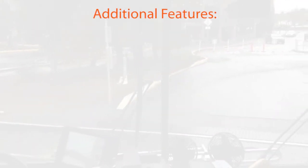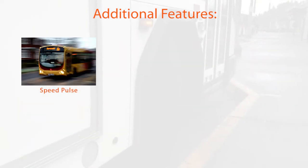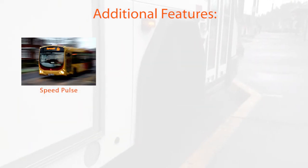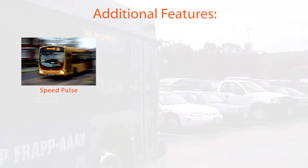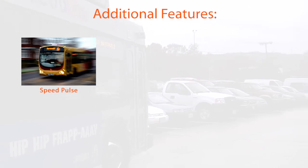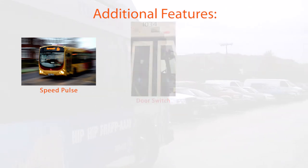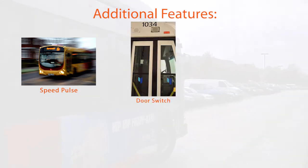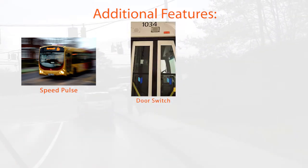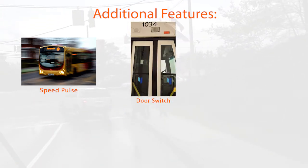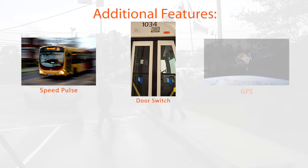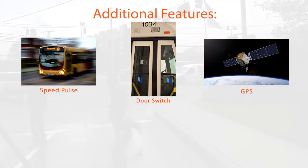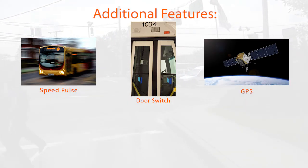Additional features of the Safe Turn Alert 2.0 system include Speed Pulse, which deactivates the system while the bus is traveling above or below a specified speed; Door Switch, which deactivates the system while the door is open; and GPS, which is used to determine the speed of the bus.